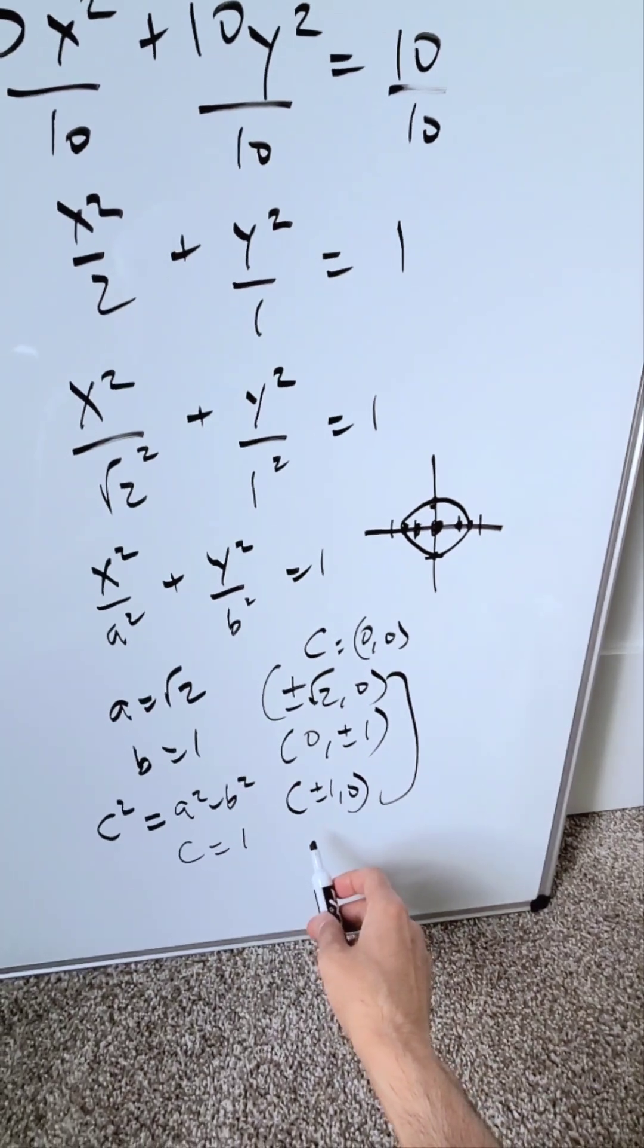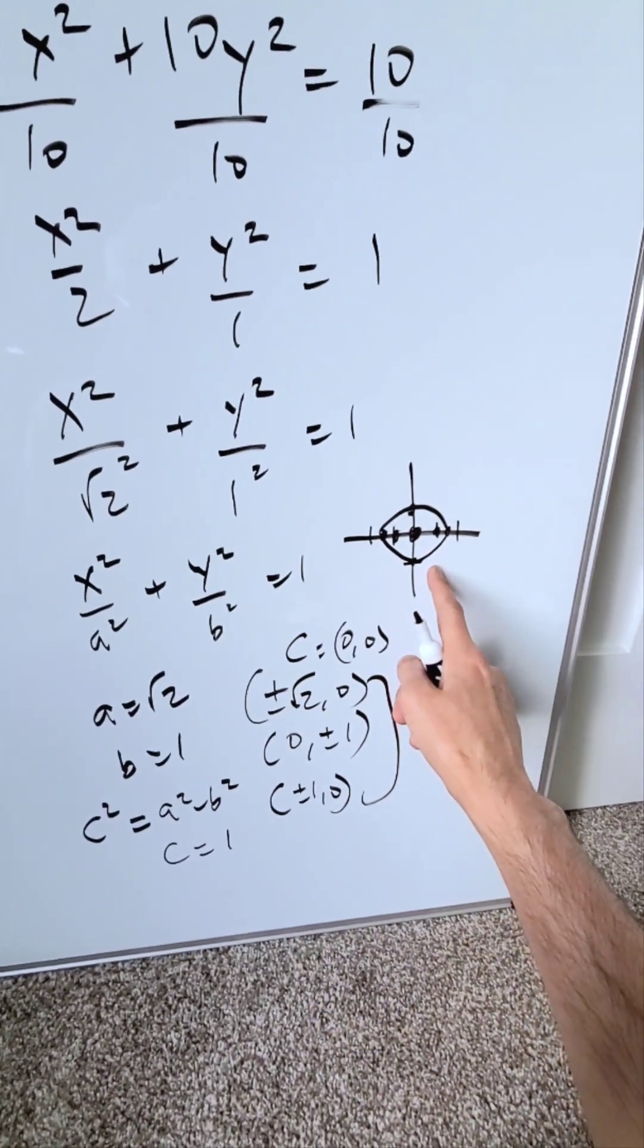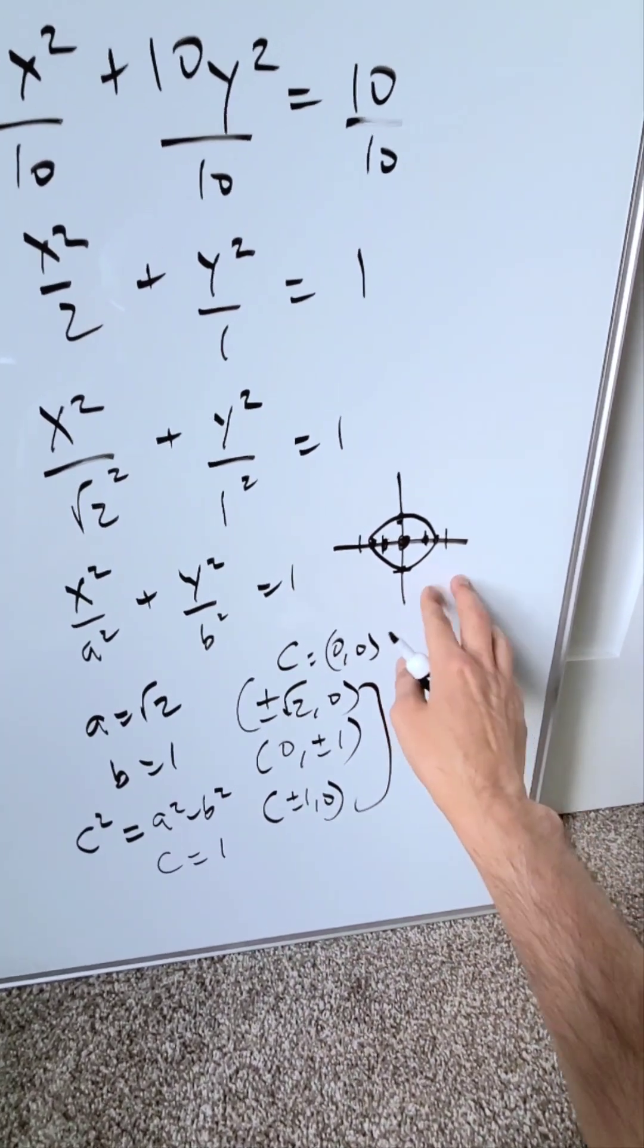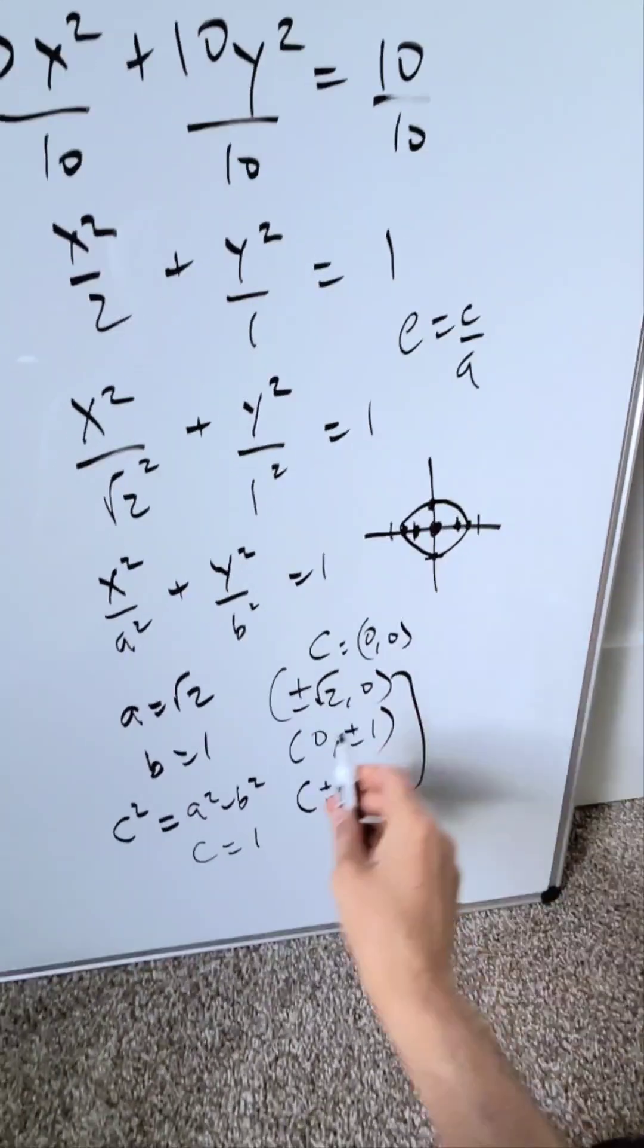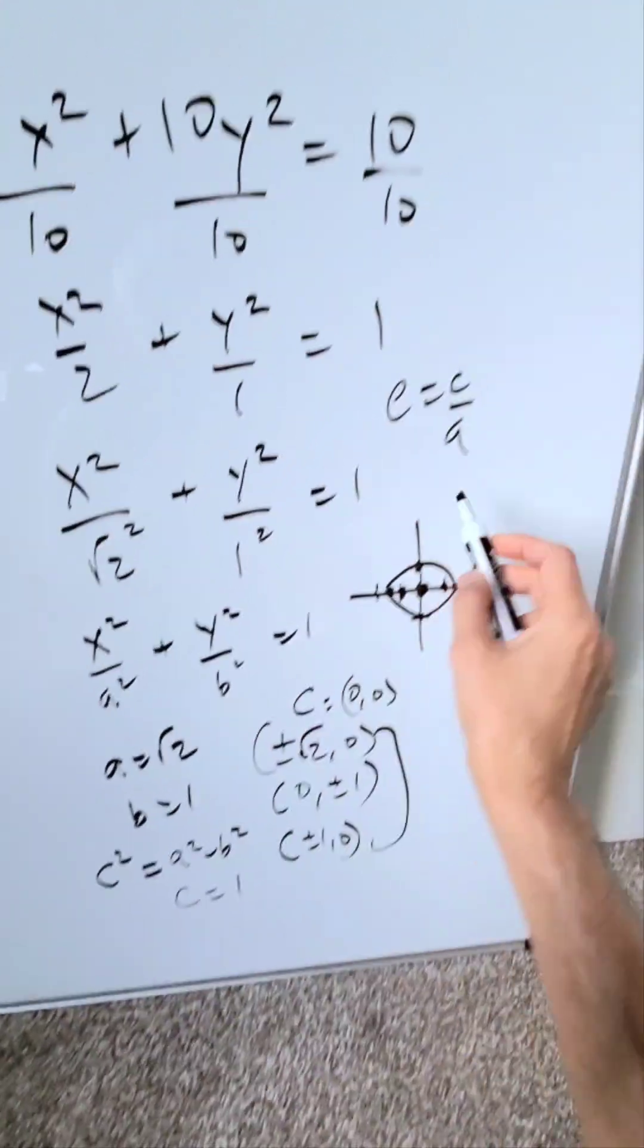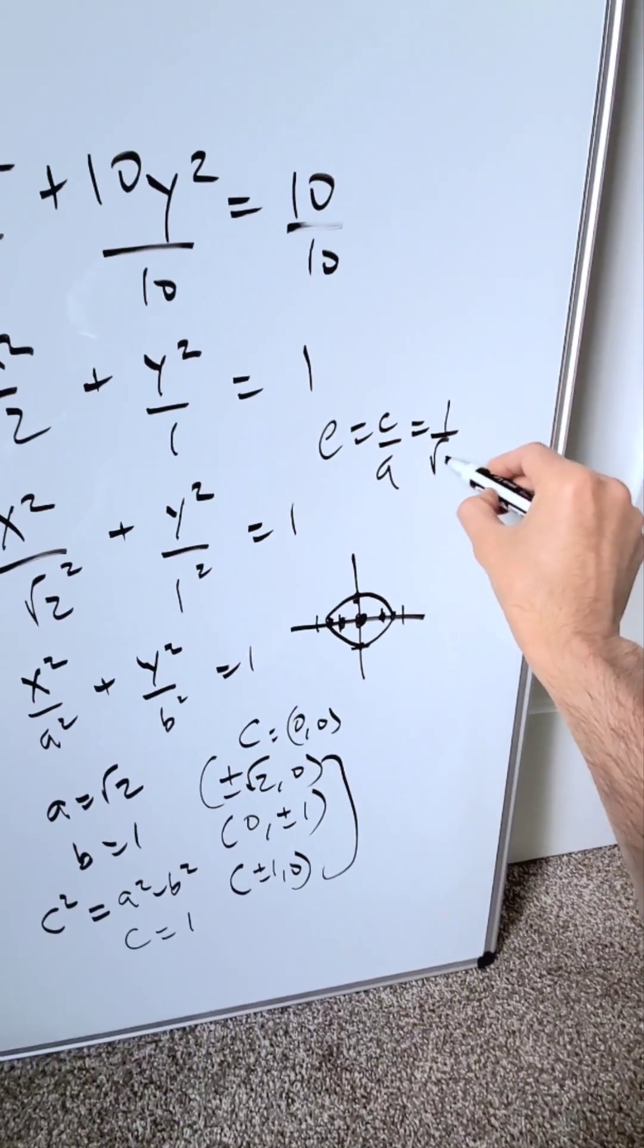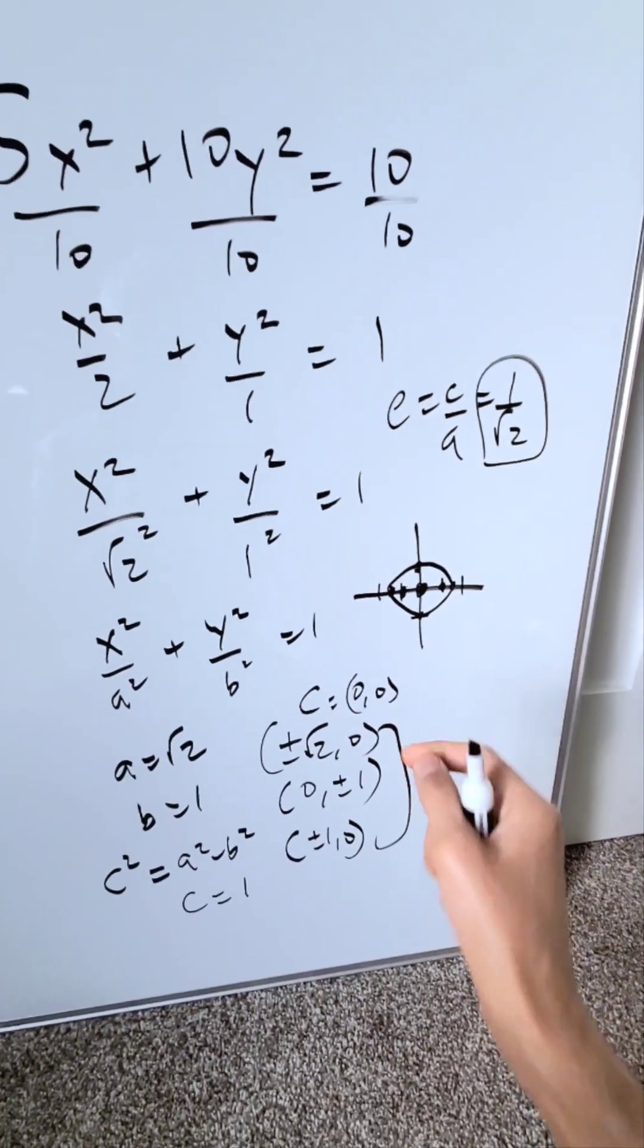If you want to determine the eccentricity of this ellipse, how less oval or how more oval or how circular it is, you can. Eccentricity is equal to c over a. I have c and a values 1 and root 2. My eccentricity here will be 1 over root 2 and it brings our analysis to an end.